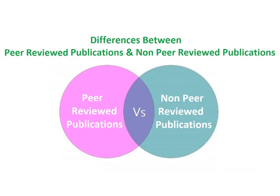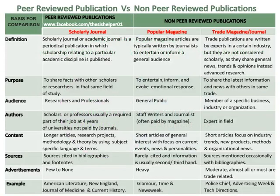Differences between peer-reviewed publications and non-peer-reviewed publications. A scholarly or academic journal is a periodical publication in which scholarship relating to a particular academic discipline is published. Popular magazine articles are typically written by journalists to entertain or inform a general audience, whereas trade publications are written by experts in a certain industry but are not considered scholarly, as they share general news, trends and opinions instead of advanced research.